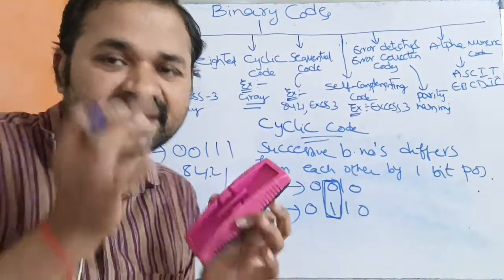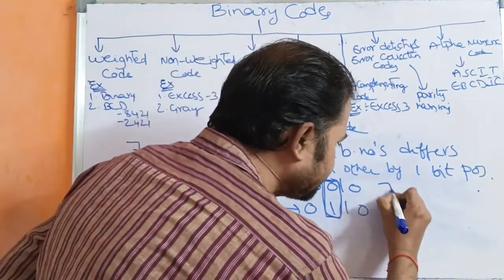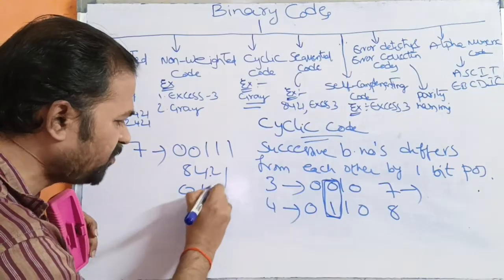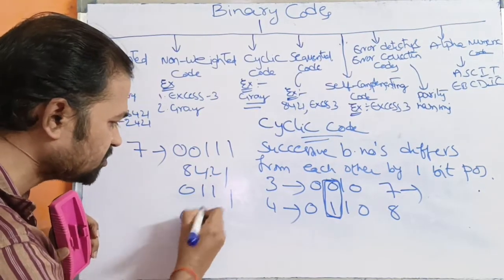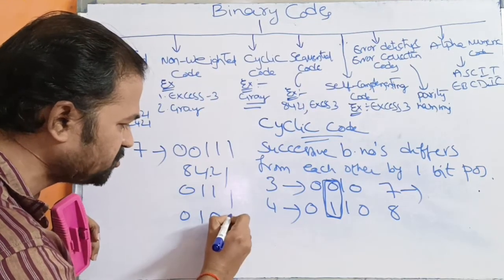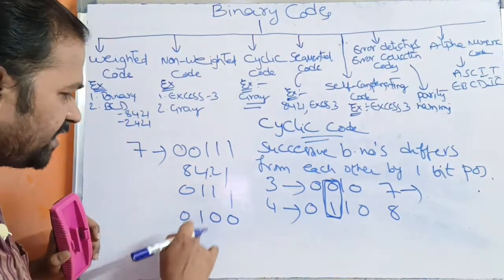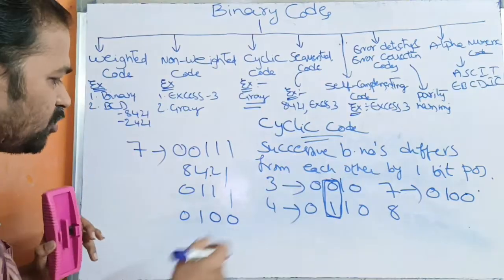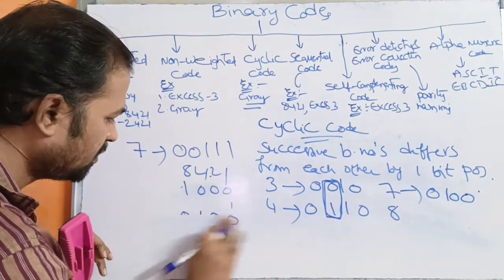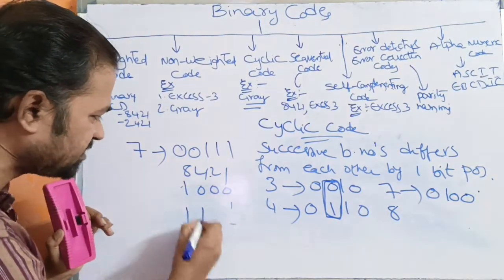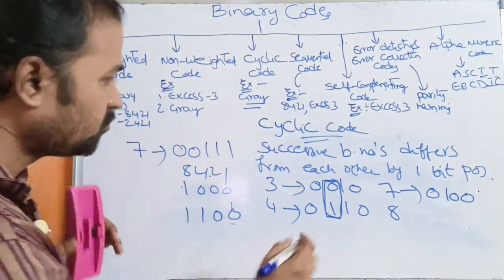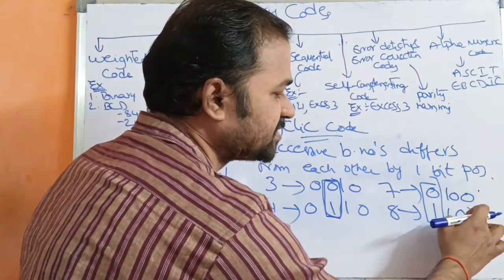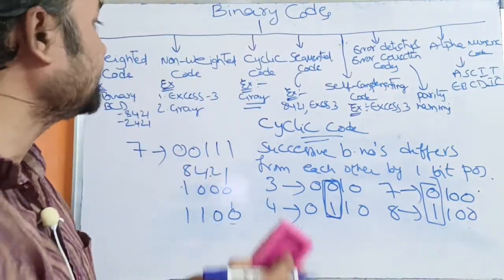Let us take 7 and 8. 7 in binary notation means 0 1 1 1. The grey code: keep 0, then 0 XOR 1 means 1, 1 XOR 1 means 0, 1 XOR 1 means 0. So 7 in grey code is 0 1 0 0. Now 8 in binary notation is 1 0 0 0. The grey code: keep 1, then 1 XOR 0 means 1, 0 XOR 0 means 0, 0 XOR 0 means 0. So 8 in grey code is 1 1 0 0. These two grey codes differ by only one bit position — this is called cyclic code.